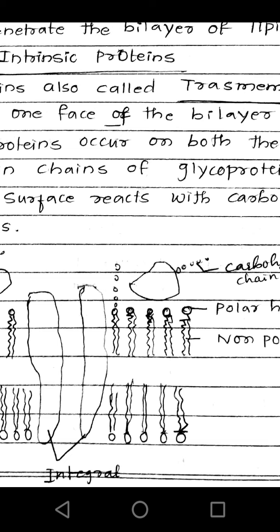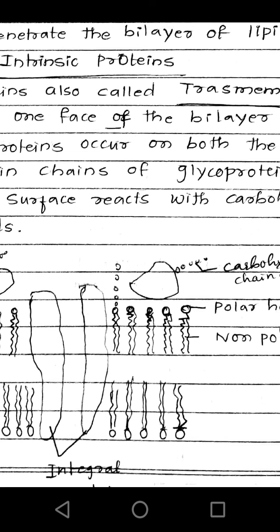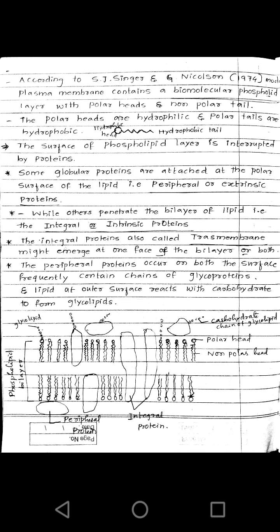As the plasma membrane consists of the phospholipid bilayer, the heads are away from each other. There is a weak force of attraction between the phospholipid bilayer — that is van der Waals force. This is the structure of the fluid mosaic model explained by S.J. Singer and G. Nicholson.